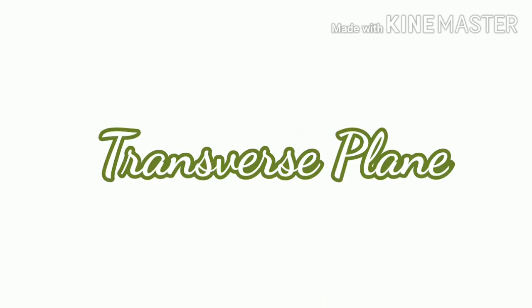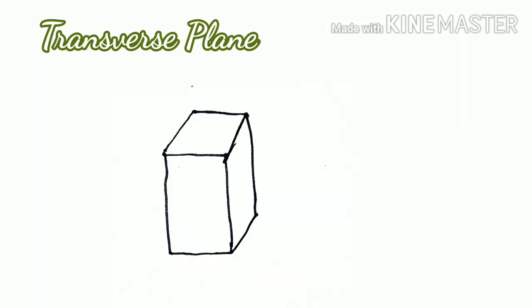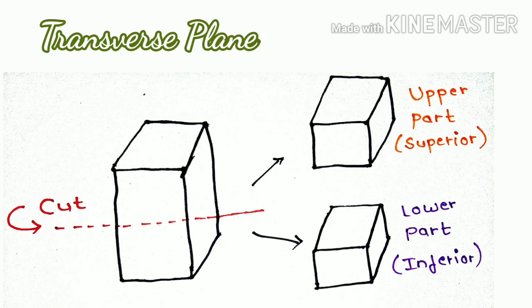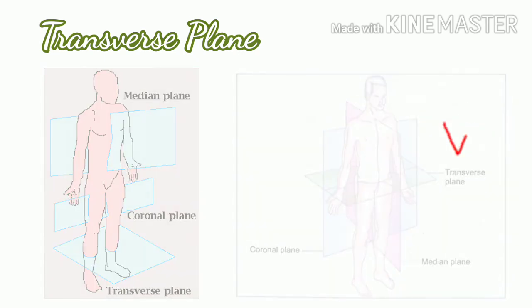The fourth comes the transverse plane: a plane at right angle to both sagittal and coronal planes, dividing the body into inferior and superior parts. Suppose this box as a body. If I make a cut that will divide the box into upper, that is superior, and lower, that is inferior parts, then such division of plane would be called transverse plane.